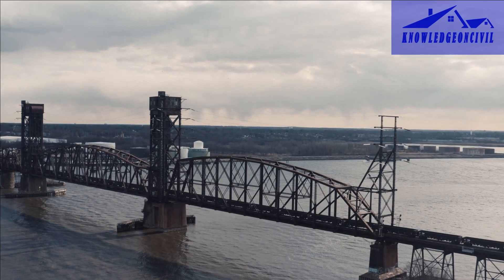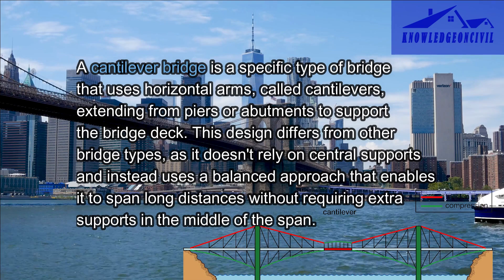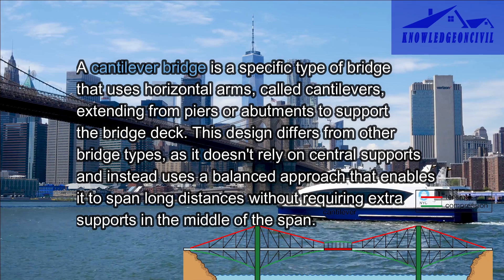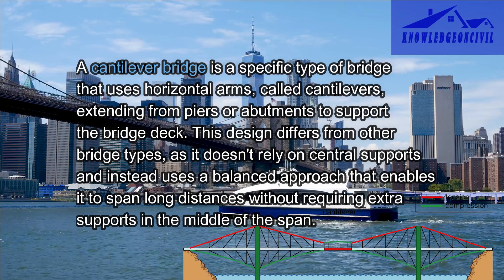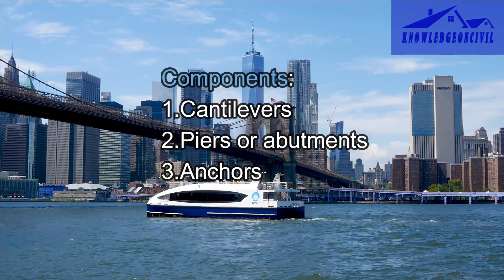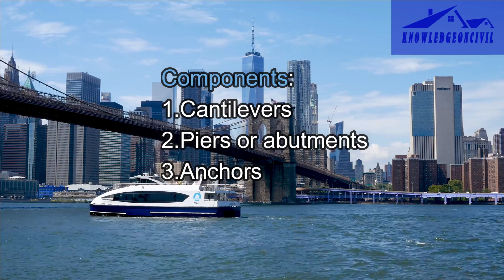A cantilever bridge is a specific type of bridge that uses horizontal arms, called cantilevers, extending from piers or abutments to support the bridge deck. This design differs from other bridge types, as it doesn't rely on central supports — instead it uses a balanced approach that enables it to span long distances without requiring extra supports in the middle. The defining feature is the horizontal cantilever arms which extend from the piers or abutments, support the bridge deck, and meet at the center, creating a suspended span.